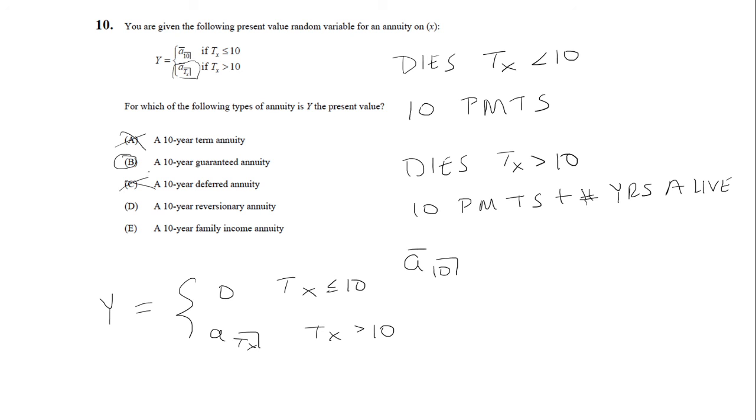A reversionary annuity depends on two people, and we only have one person here. We definitely don't have a family income annuity either, so that's not it. The answer is B.